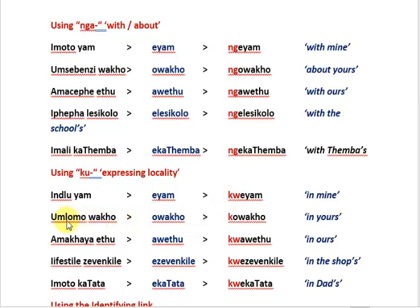'Umlomo wako' — your mouth; 'owako' — yours; 'kowako' — in yours. Remember we cannot have 'kwo' in isiXhosa. 'Imoto kaBaba' — dad's car; 'ekaBaba' — that belonging to dad; 'kwekaBaba' — in dad's, referring to the car of course.